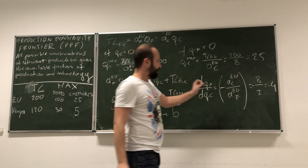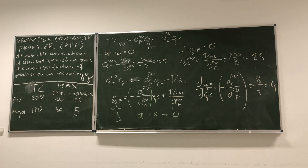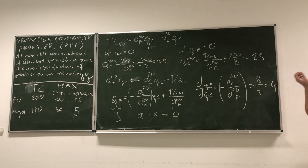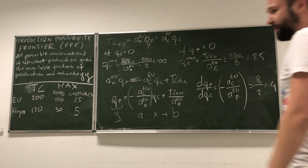It makes perfect sense that it has a minus here. From this we get that if I want to produce one additional unit of chemicals in the European Union, I will have to give up 4 units of food. We can make exactly the same calculations for Kenya — please do them at home — and you will obtain the entire production possibility frontier.